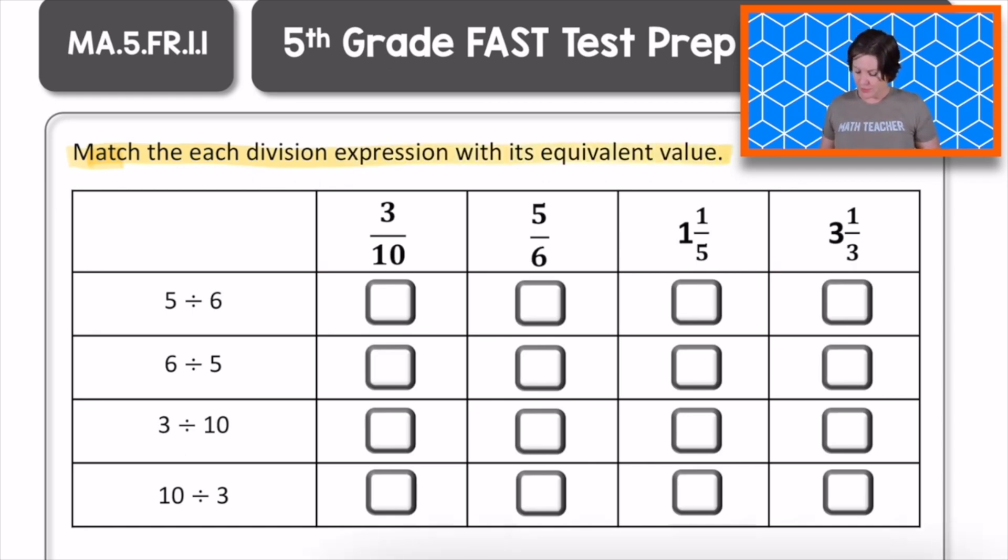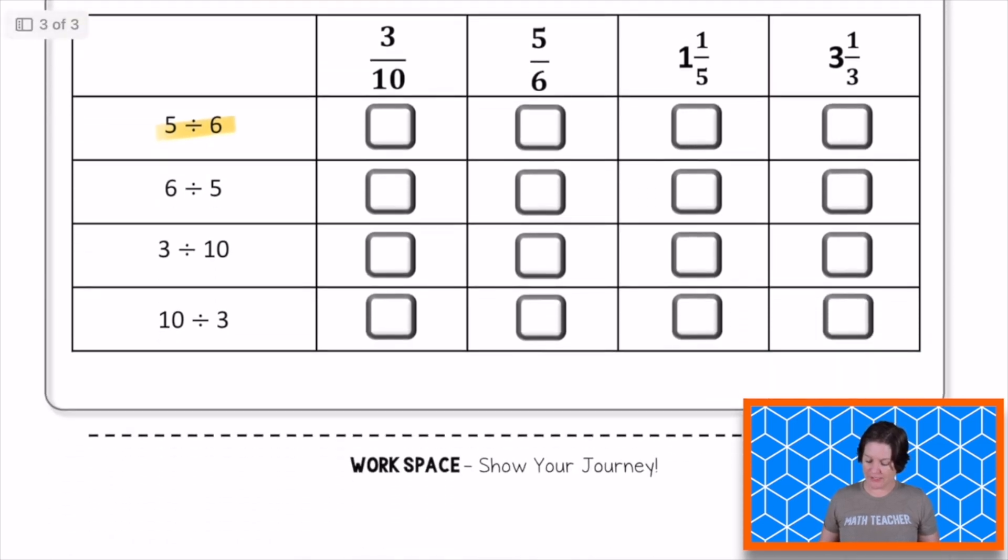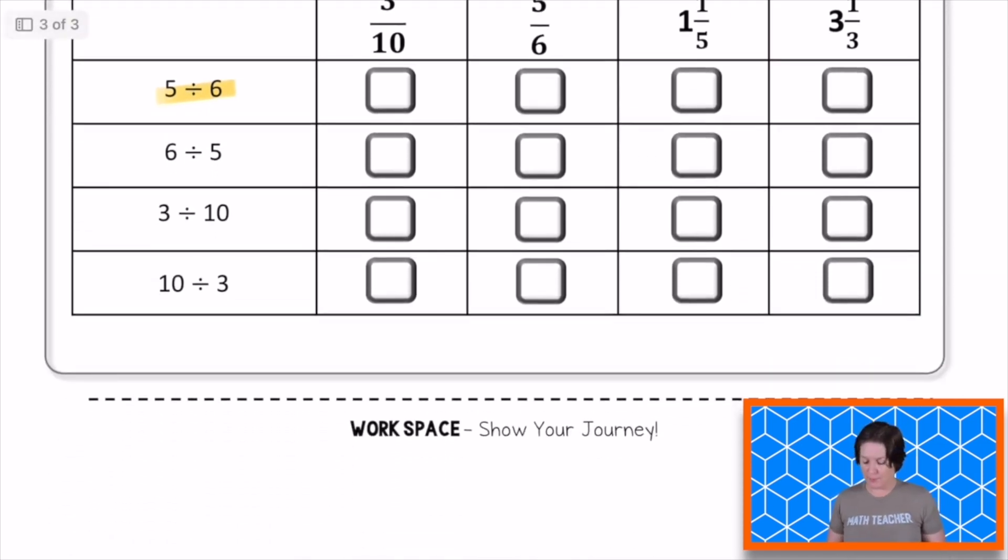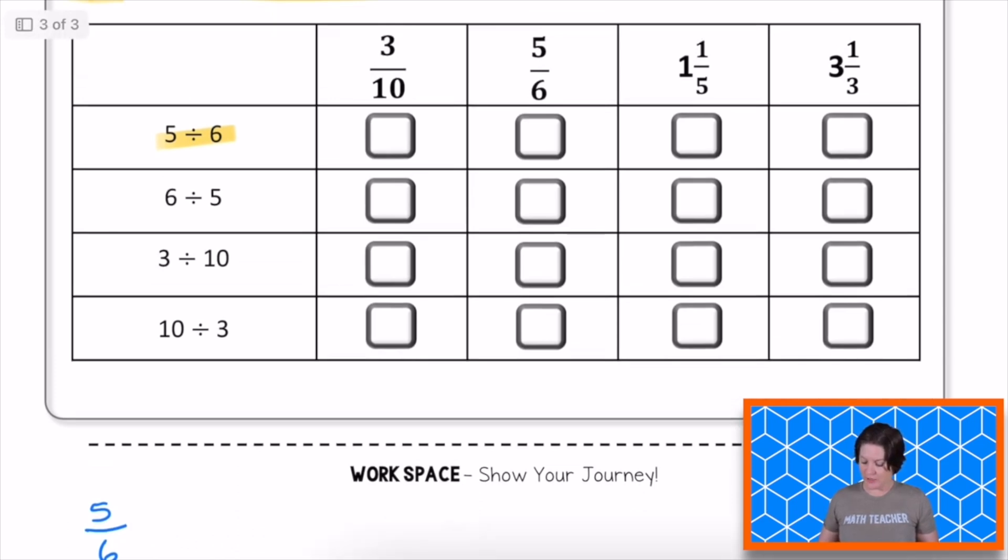So what we do is we have these expressions over here, and they're division expressions that we need to rewrite as a fraction. So let me go ahead and take that first one. 5 divided by 6 is the same as 5 sixths. So because of that, I can go ahead and just mark 5 sixths. That was pretty simple, wasn't it?